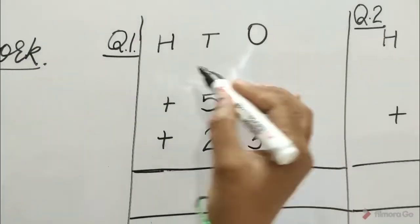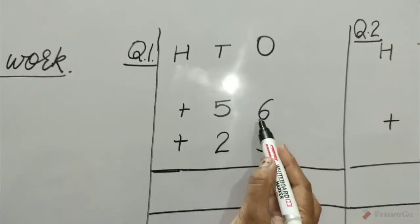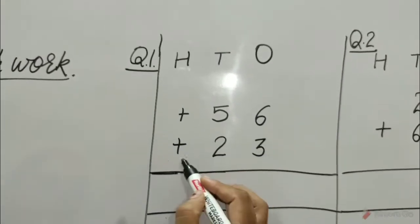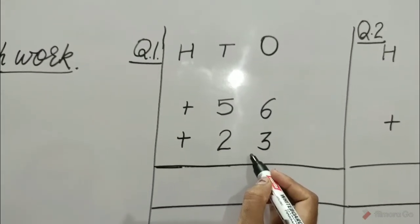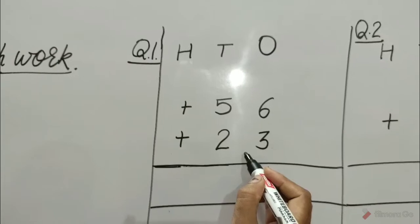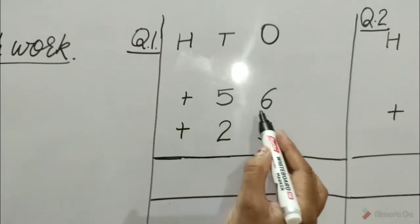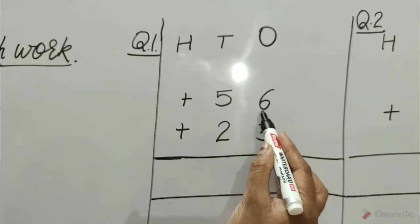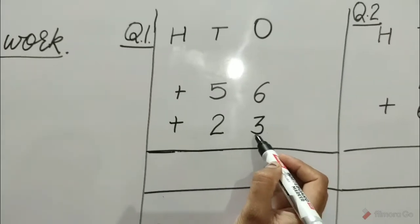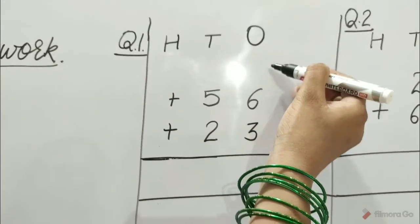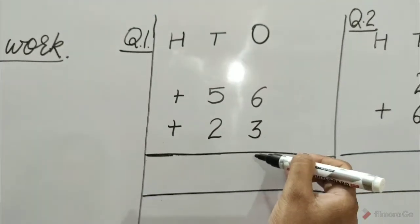Question number 1 is 56 plus 23. In this question we have 5 tens, 6 ones and 2 tens, 3 ones. Let's add ones first.